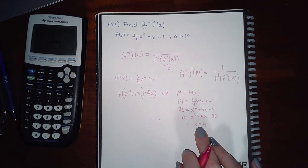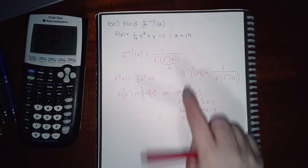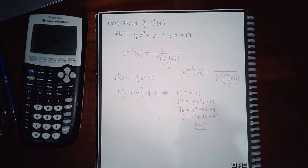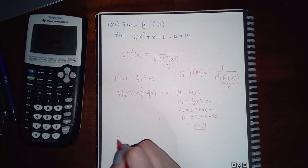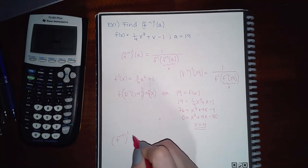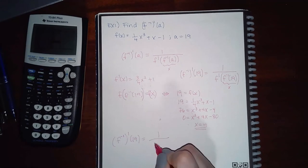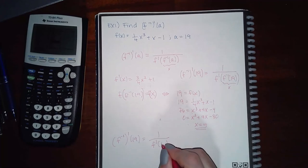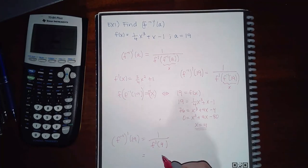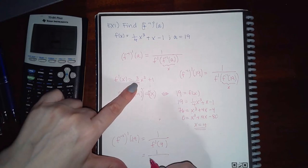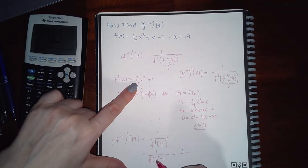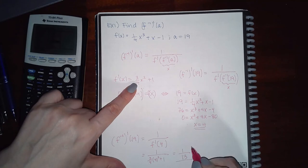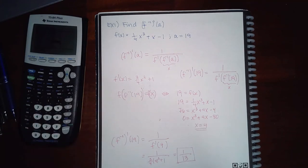Now that we know f-inverse(19) = 4, we compute 1 / f′(4). Plugging 4 into f′(x) = (3/4)x² + 1: (3/4)(16) + 1 = 12 + 1 = 13. So the answer is 1/13.